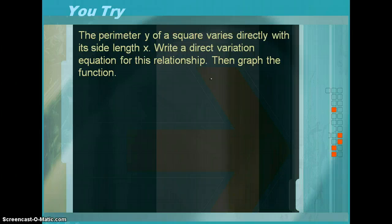So for you to try, the perimeter y of a square varies directly with its side length x. Write a direct variation equation for this relationship, then graph the function. This is the final video of four videos.